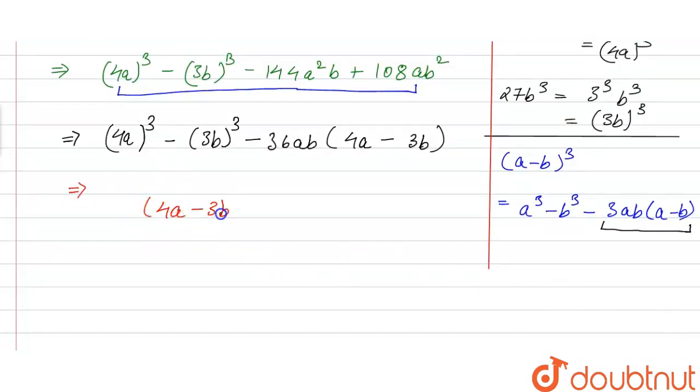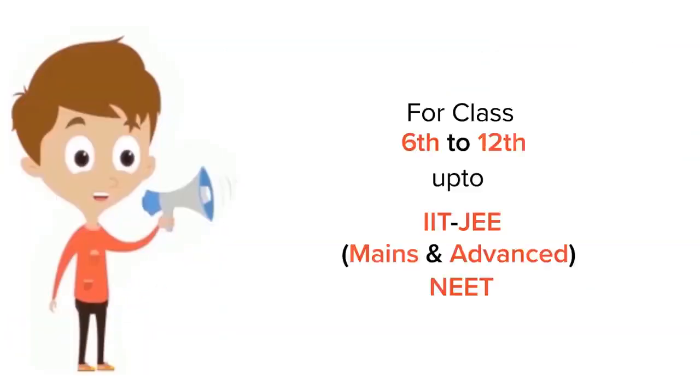So this term here is written as (4a - 3b)³. If we further split this 36ab, we can write it as 3 × 4a × 3b, that is equal to 36ab. So this whole term is exactly the expansion of (4a - 3b)³, so this will be the answer.